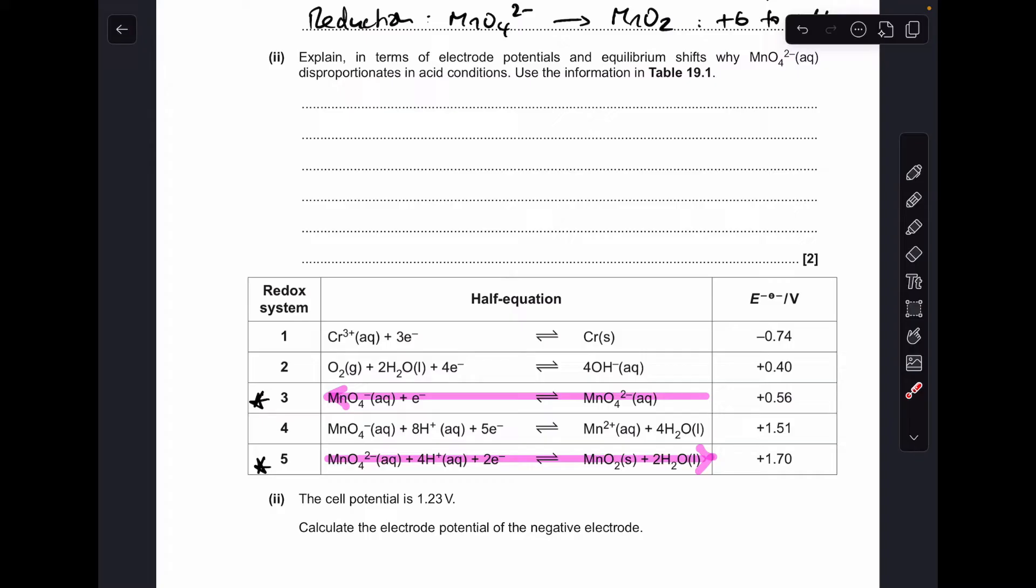For the next part, we've got to use the information in the table to explain why that happens, why does MnO4²⁻ disproportionate in acid conditions. So I've already started the two half equations we're going to be interested in. They both contain that MnO4²⁻ ion. Similar to before, the more positive electrode potential is going to run in the forwards direction. To get the idea of equilibrium into the answer, this one is going to shift to the right, and therefore the less positive electrode potential system will shift to the left. If we have a look at the electrons, we've got just the 1 in system 3, we've got 2 in system 5, so we're going to need to double system 3 when we add it to system 5.